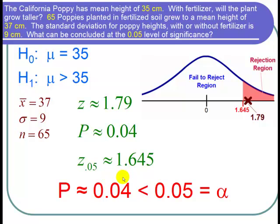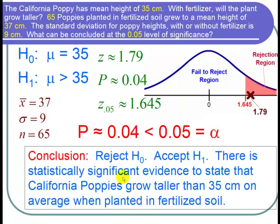So now it's time to state the conclusion. We can conclude that we reject the null hypothesis and we accept the alternative hypothesis. And we can state that there is statistically significant evidence to state that California poppies grow taller than 35 centimeters on average when planted in fertilized soil. And I'm done with the problem.